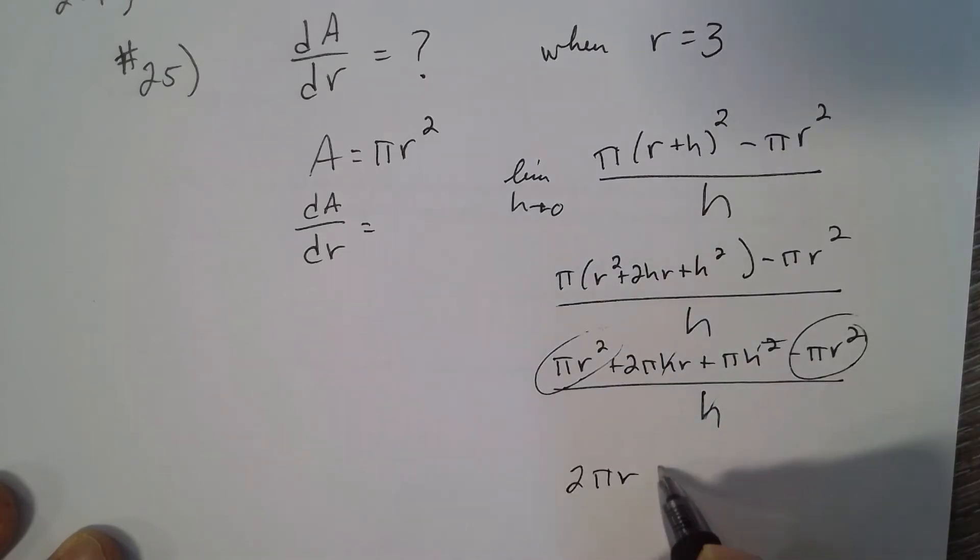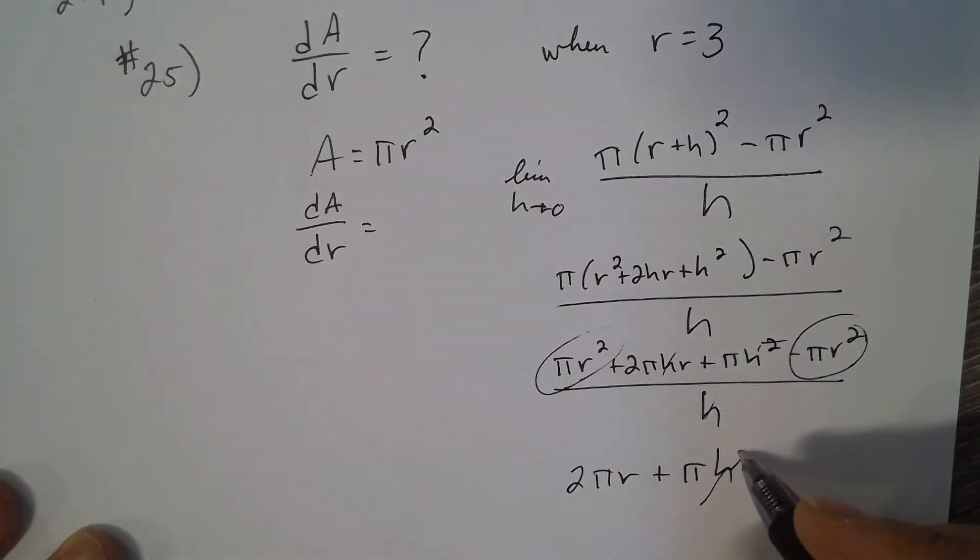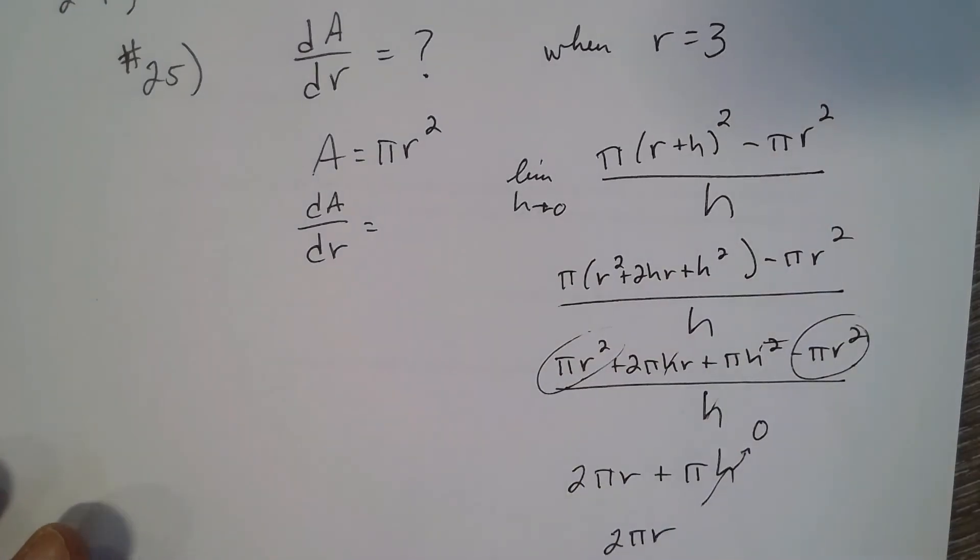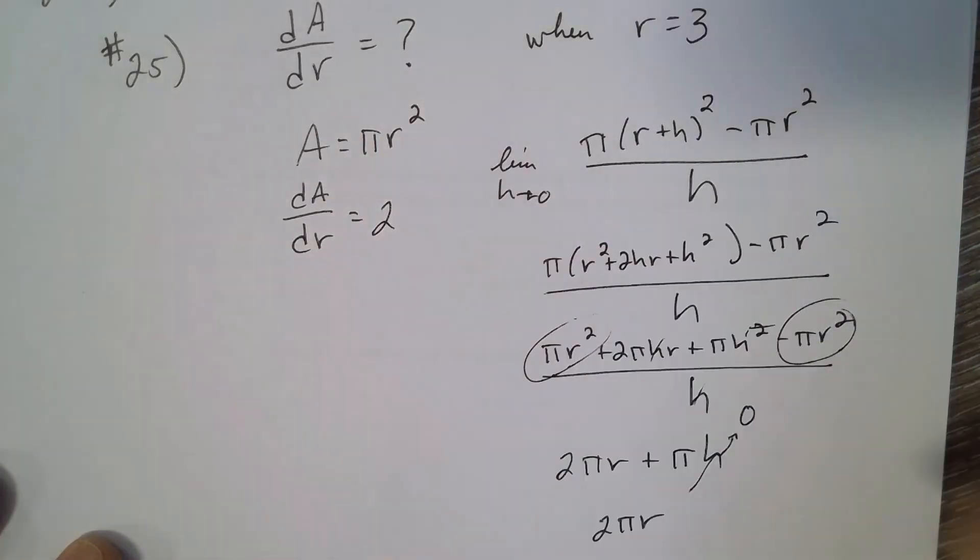As h is going to 0, I get 2πr. So the rate of change of area of a circle with respect to radius is 2πr.